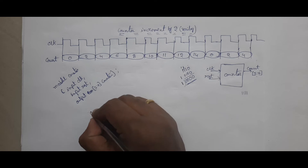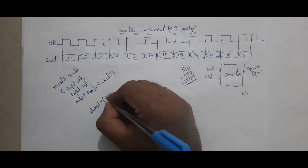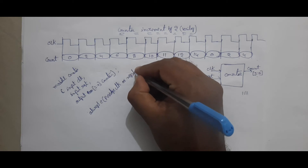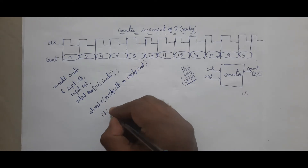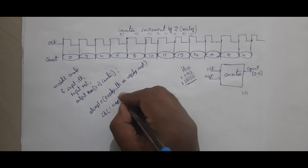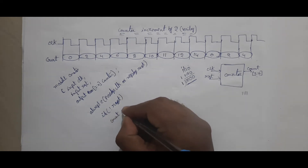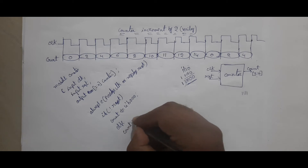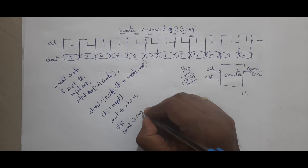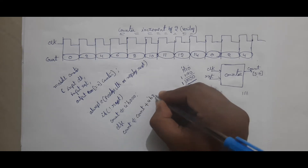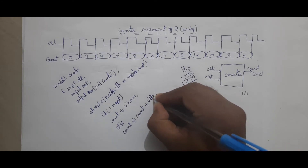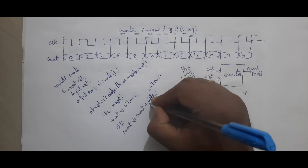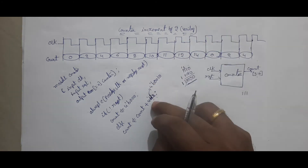Here I am using an always block. Always at posedge clock or negedge reset — if not reset, count <= 4'b0000; else count <= count + 4'd2; semicolon. 2 means decimal number. If you write B here, you write 4'b0010; if you write D here, 4'd2 is enough — that is your choice how you implement it.